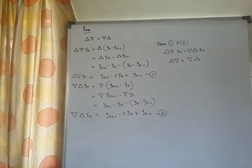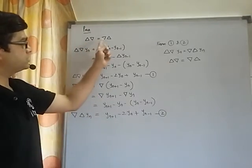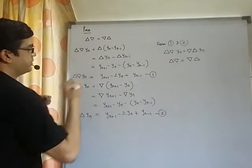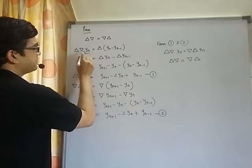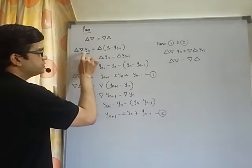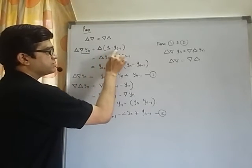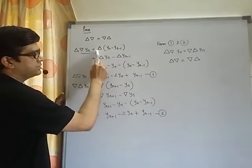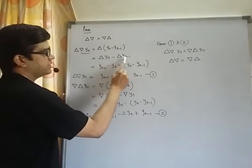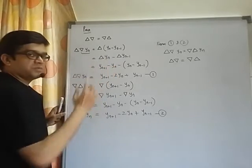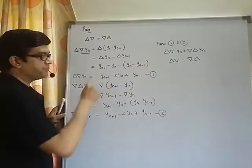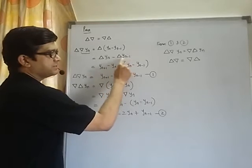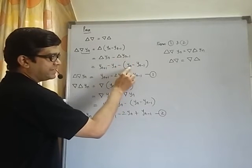Another very important question: prove that δ∇ = ∇δ. Consider δ∇ operating on yₙ. Nabla yₙ gives the difference between current value yₙ and its previous value yₙ₋₁. Next, distribute δ on both terms: δyₙ - δyₙ₋₁. The delta operator gives the difference between the next value and the current value, so δyₙ = yₙ₊₁ - yₙ.